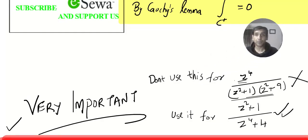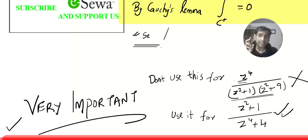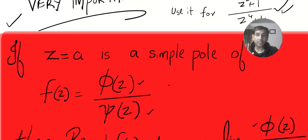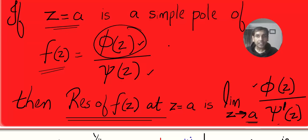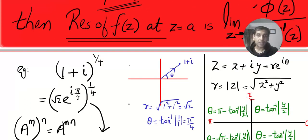Before we calculate residues, we have three methods. Method one: the series method, which is how we found residues in the first video. Method two: using limits to evaluate the residue, learned in the second video — one of the most systematic methods. Method three: if you have polynomial divided by polynomial with a simple pole, the residue can be evaluated very easily by finding the limit of the function divided by the derivative of the denominator. This only works for polynomial by polynomial.